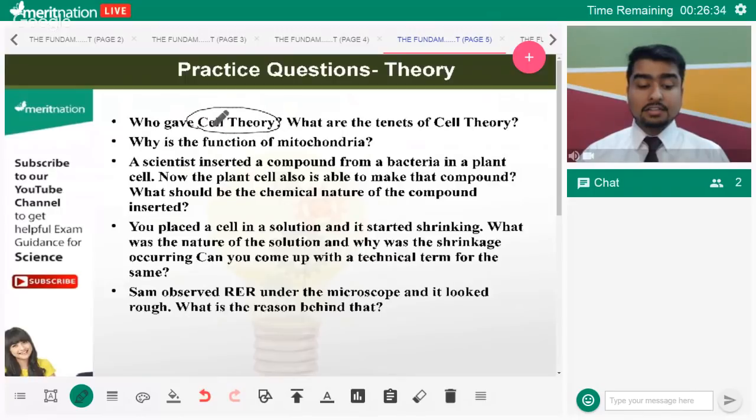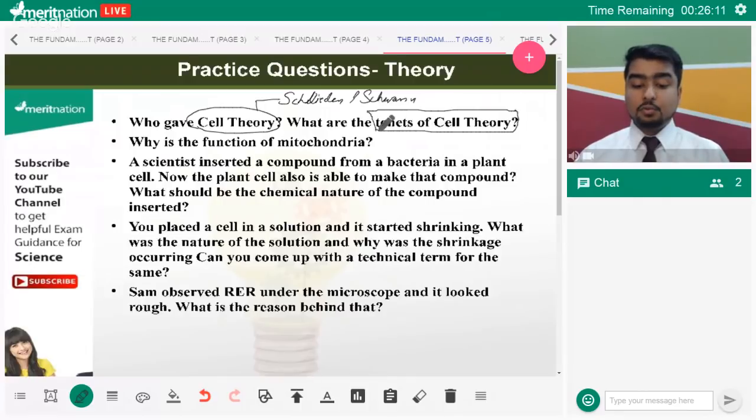Why are lysosomes called suicidal bags? Because lysosomes have several hydrolytic enzymes. When the lysosome bursts open, even the cell itself as a whole can be digested. The cell commits suicide by activating the lysosomes to burst. That is why it's called the suicidal bags. These are several practice questions that are frequently asked in the examinations. Who gave the cell theory? Schleiden and Schwann. Make sure that while you're writing the name, don't mess up the spellings.